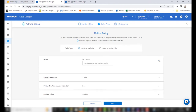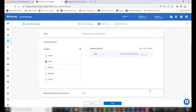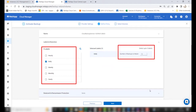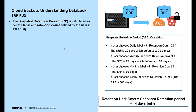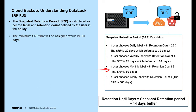In the next page of the wizard, define the policy by giving it a name or choosing the default name. In the Label and Retention section, select the label and retention carefully, as it determines the snapshot retention period. The snapshot retention period is calculated based on the label and retention count defined in the policy. The minimum snapshot retention period assigned is 30 days. For example, if a user chooses a daily label with a retention count of 20, the snapshot retention period calculates to 20 days but defaults to 30 days as the minimum. If the user chooses a monthly label with a retention count of 3, the snapshot retention period is 90 days.